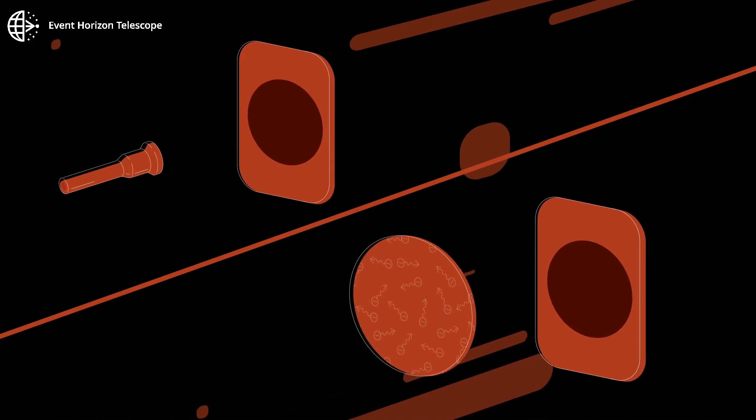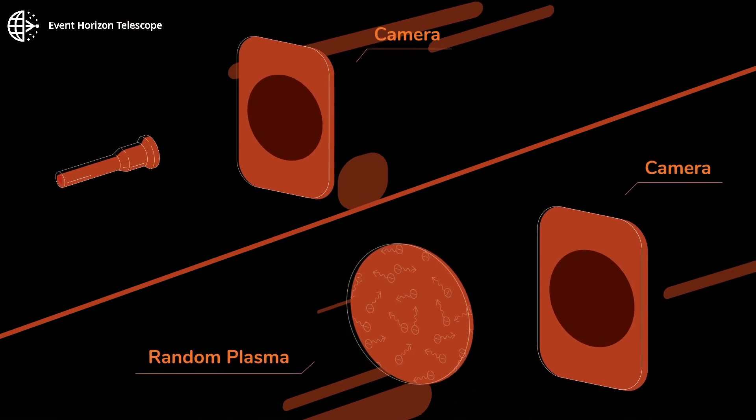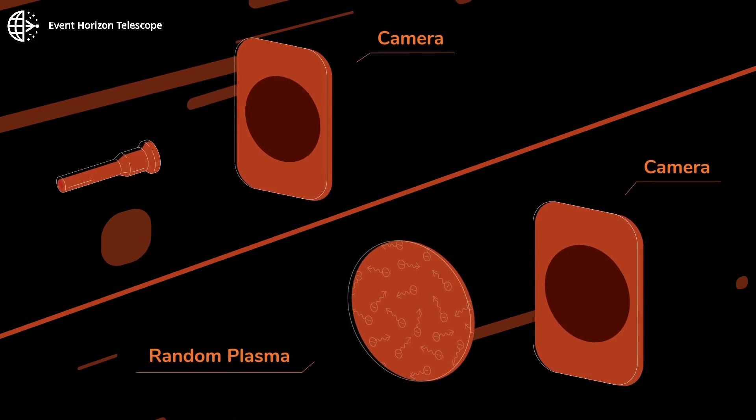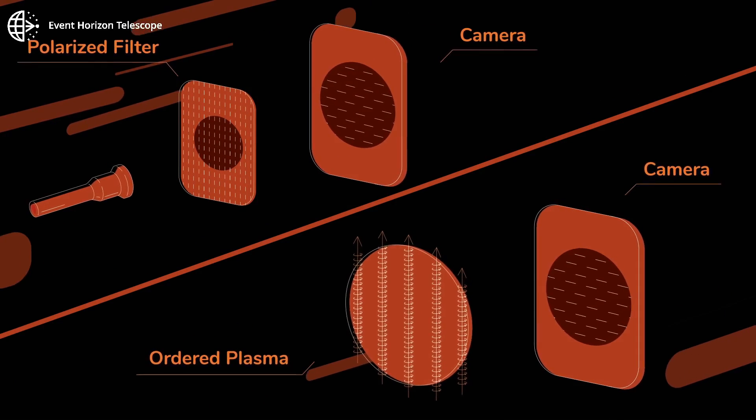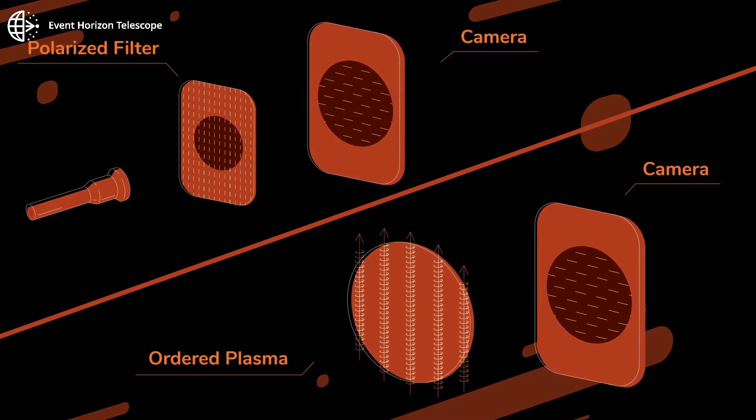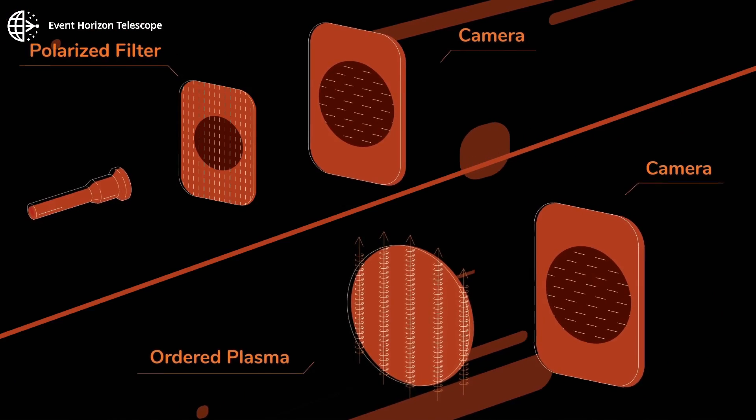In space, randomly moving hot gas or plasma emits unpolarized light, like the torch. Plasma threaded by a magnetic field is ordered and the emitted light is polarized. The magnetic field acts as a polarized filter.